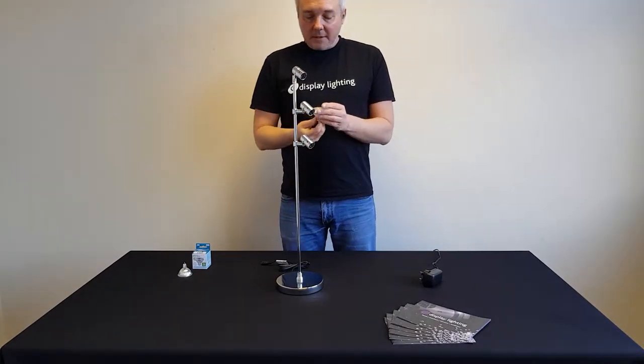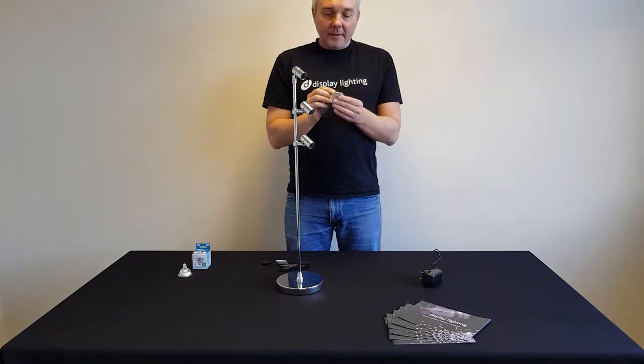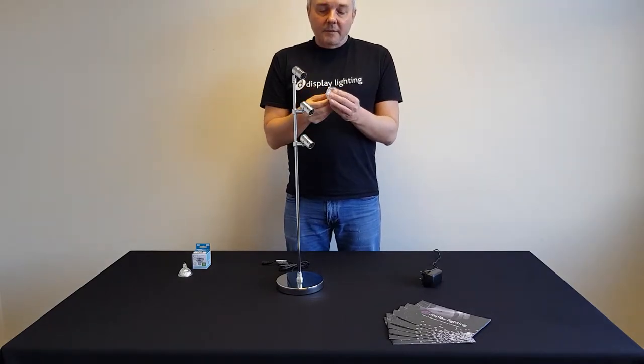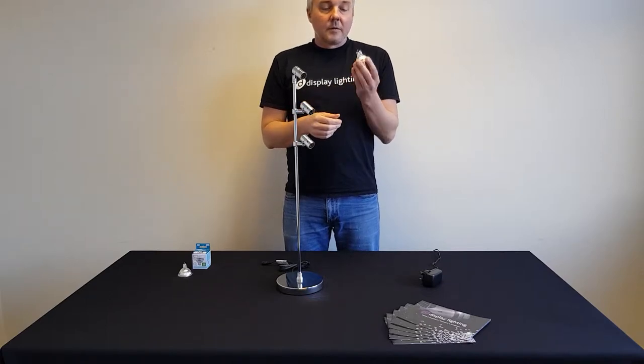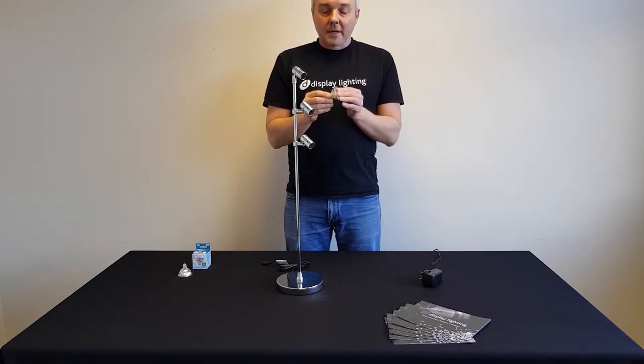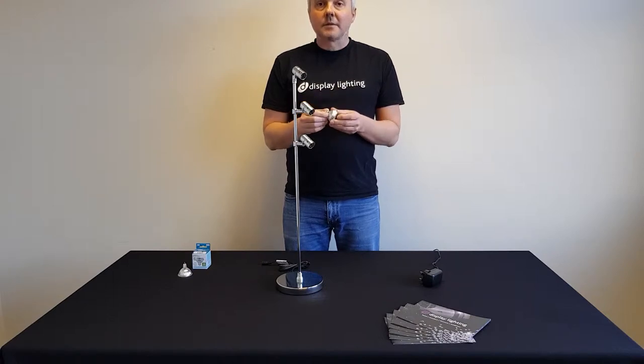The MR16 lamps are 5 watts and give around 350 lumens each. They're also available in warm white, which is 2800K, and cool white, which is 4000K.